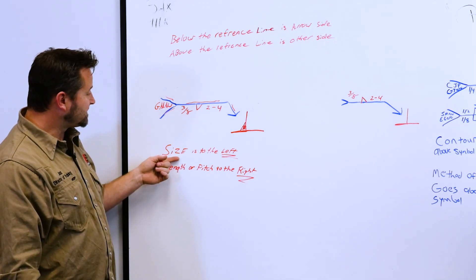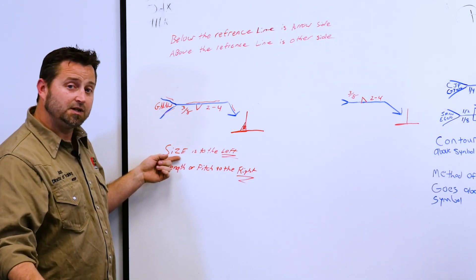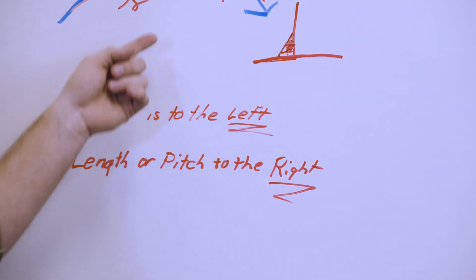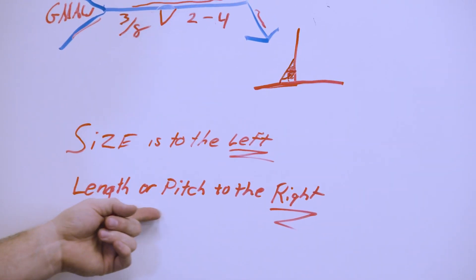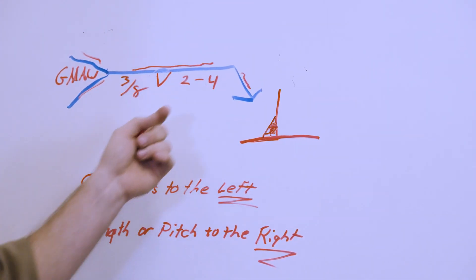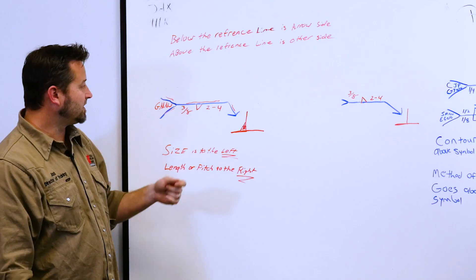So I wrote you some more notes here. Size, the size of your fillet weld, the size of the weld, whatever it's going to be, is going to the left of your welding symbol. The length or the pitch will be to the right. So the length or pitch is to the right, size is to the left.